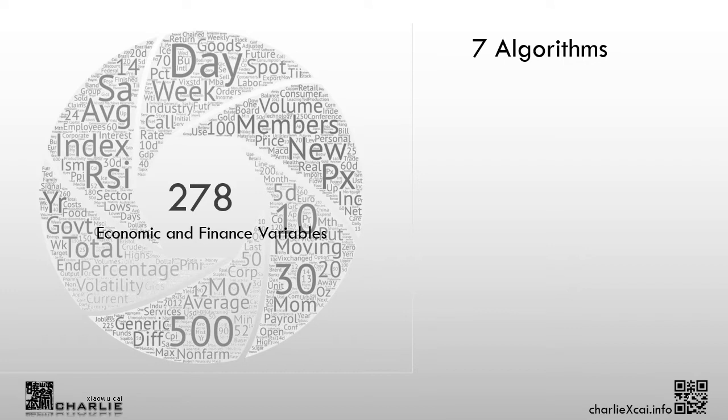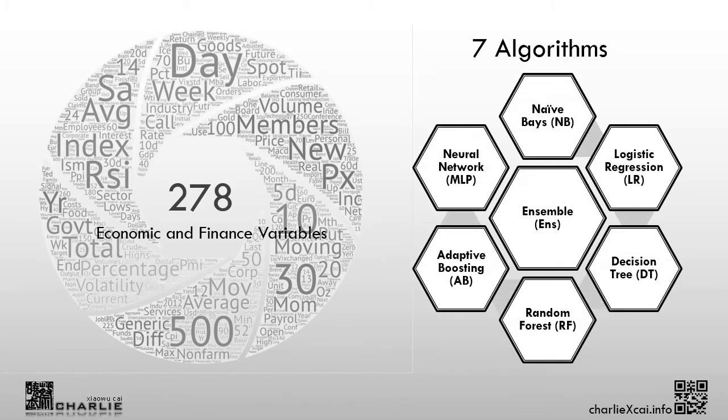We include seven machine learning algorithms, starting from some simple basic Naive Bayes and logistic regressions. We then include several algorithms relating to decision tree predictions. And we include one advanced, more complex model using a neural network — the multi-layer perceptron algorithm. At the end, we create an ensemble based on all of these algorithms.